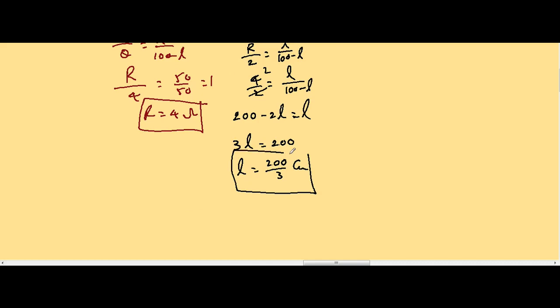So when a 4 ohm resistor is connected in parallel to the 4 ohm, the balancing point shifts to 200 by 3.